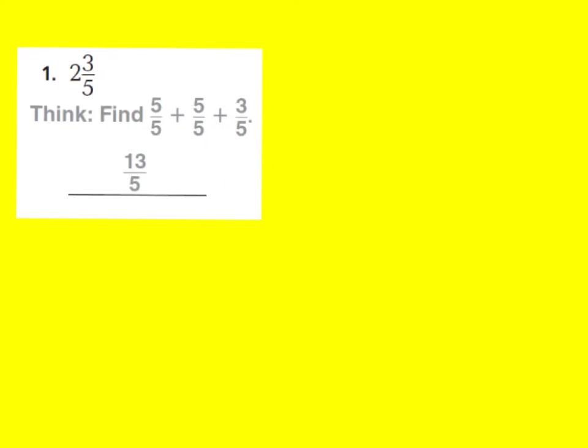The addition sentence for this mixed number would be 5 fifths plus 5 fifths plus 3 fifths equals 13 fifths. A good way to check it is to multiply your denominator times the whole number, which equals 10 fifths, and then add the numerator, which is 3. So 10 plus 3 is 13 fifths.